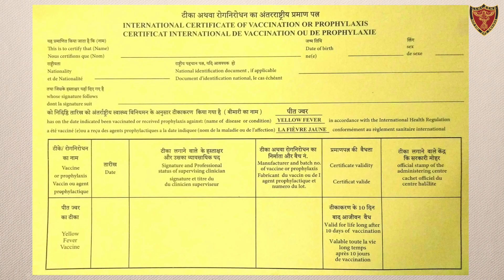The second step is where the person goes for vaccination and fills all the documents related to vaccination. The document which is a must for yellow fever vaccination is the passport, as all the details filled on the yellow fever certificate are as per the passport details — including the name, passport number, nationality, date of birth, gender, and signature of the person.